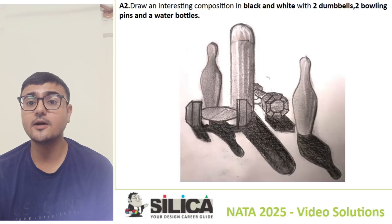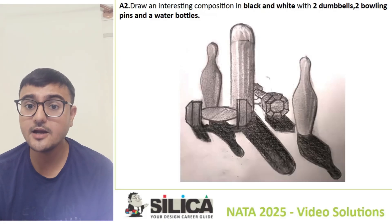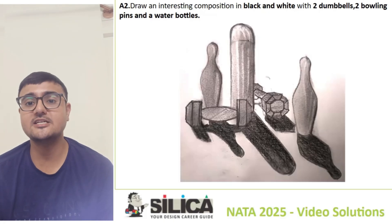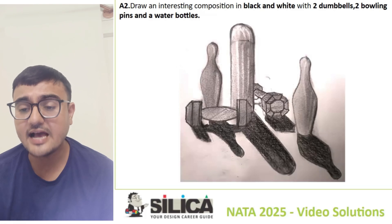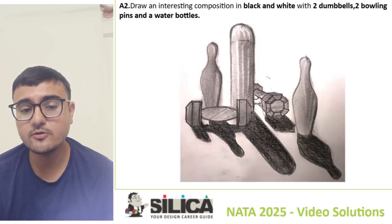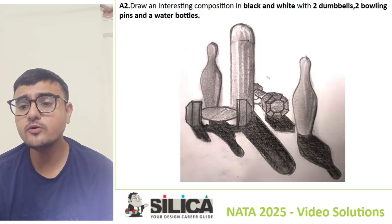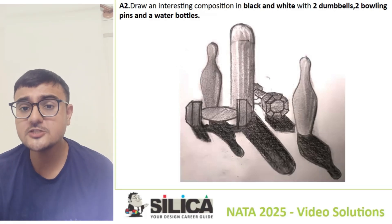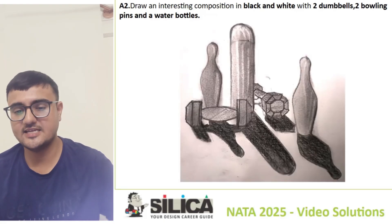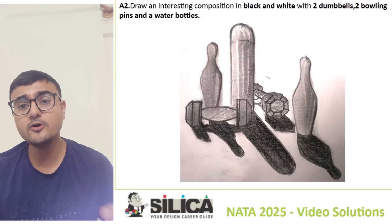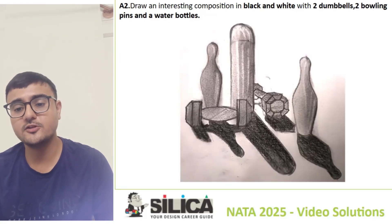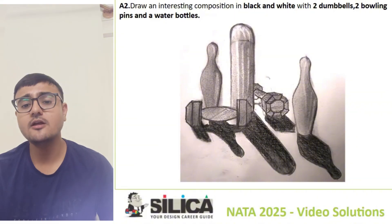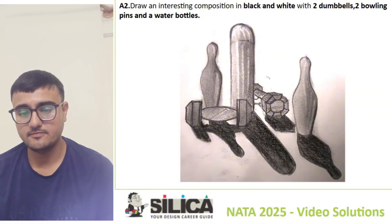One dumbbell is placed horizontally and the second diagonally. Perspective is very important — whenever you create a 3D composition you must use perspective. The two bowling pins are arranged with one on the front side and one on the back side, giving a balanced composition focused on the water bottle at the center.